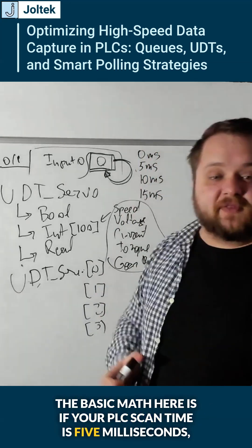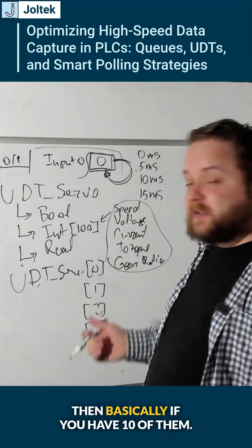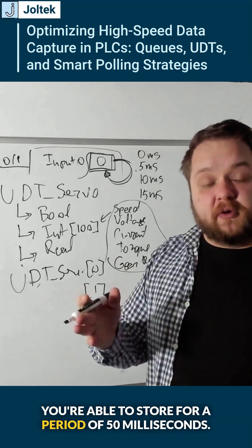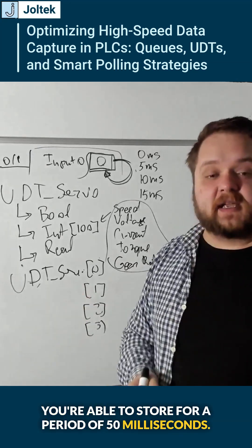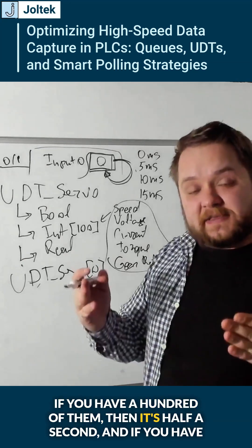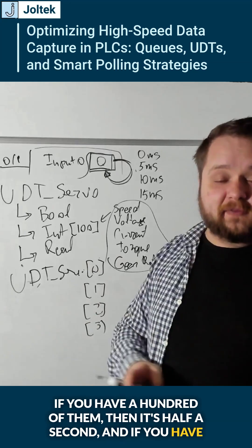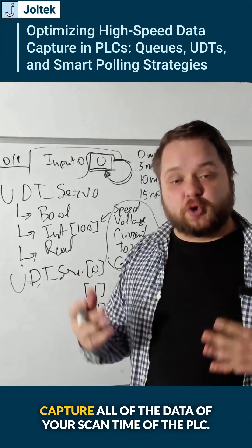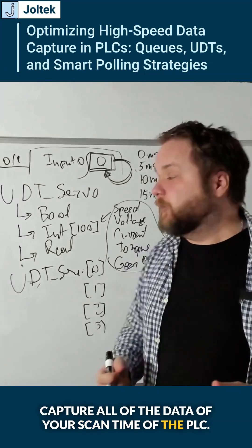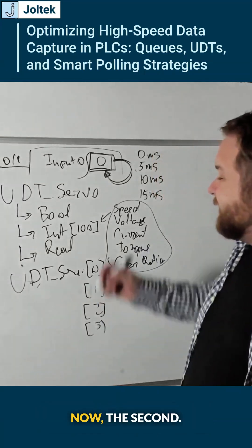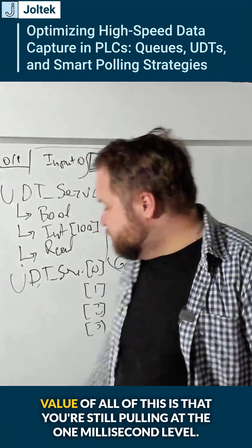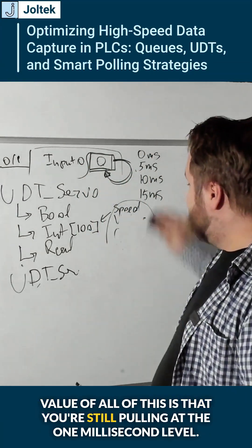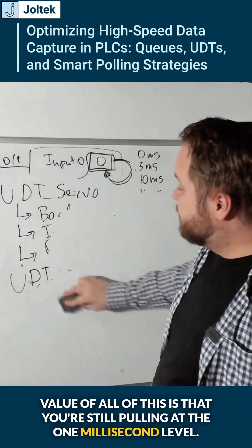The basic math here is: if your PLC scan time is five milliseconds, then if you have 10 of them you're able to store for a period of 50 milliseconds. If you have a hundred of them then it's half a second, and if you have 200 of them then you should be able to capture all of the data within your PLC scan time.